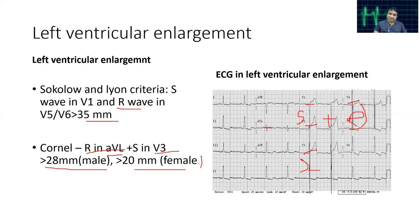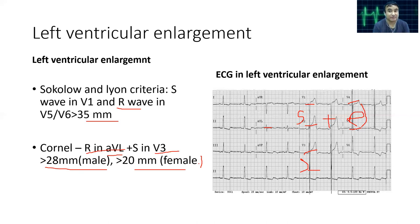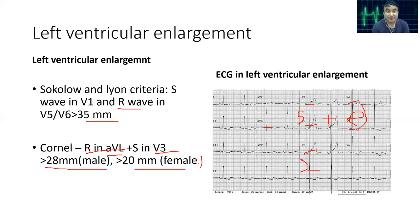To summarize for MBBS students: For right atrial enlargement, check the amplitude of the P wave in Lead 2 — if more than 2.5 mm it is significant. For left atrial enlargement, there is increase in duration of the P wave — if more than 120 milliseconds, suspect left atrial enlargement. For right ventricular hypertrophy, check V1 and V2 for predominantly positive waves. For left ventricular enlargement, there is more positive deflection in left-sided electrodes like V5 or V6 and more negative waves in V1.